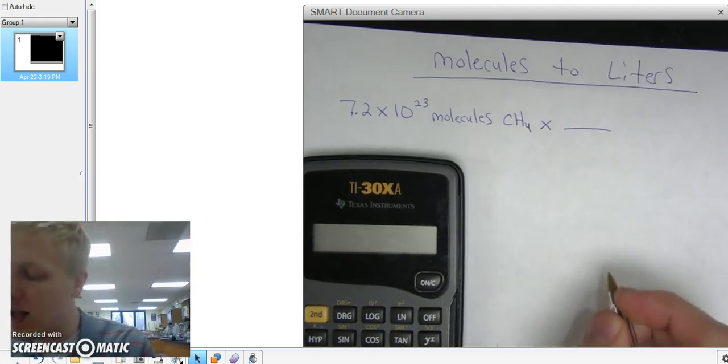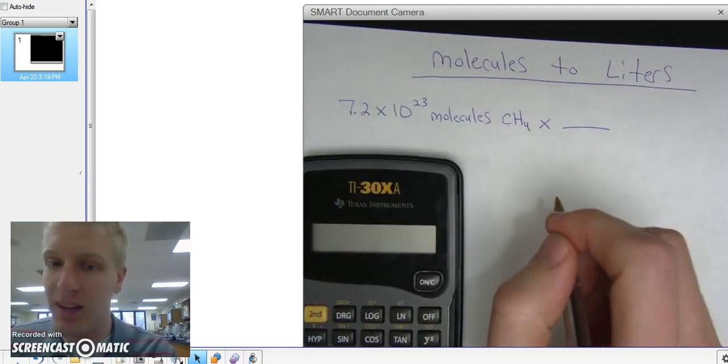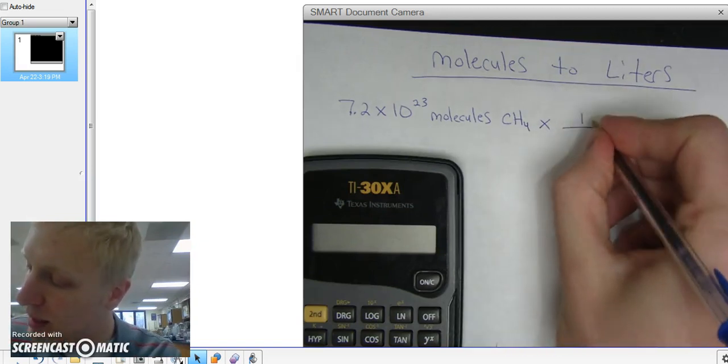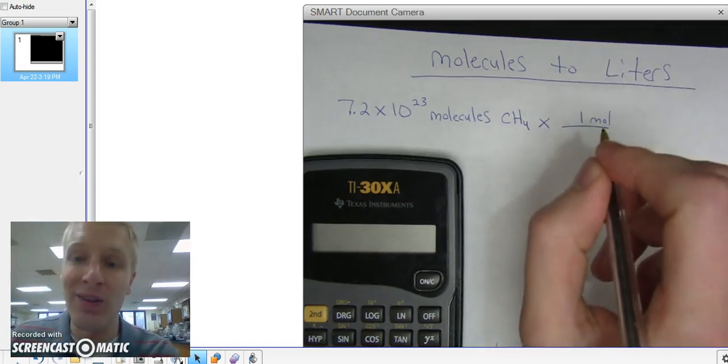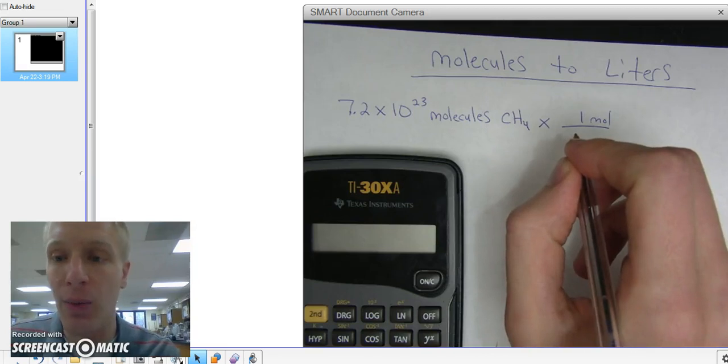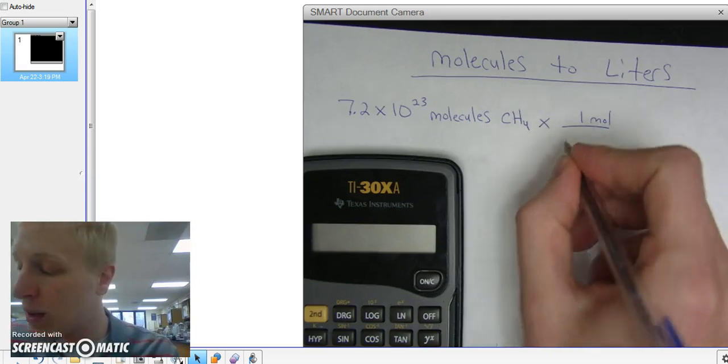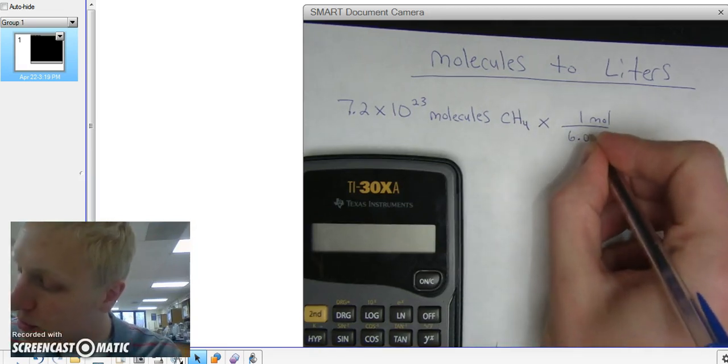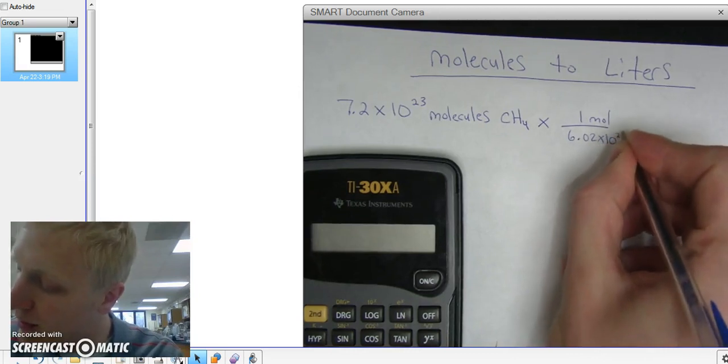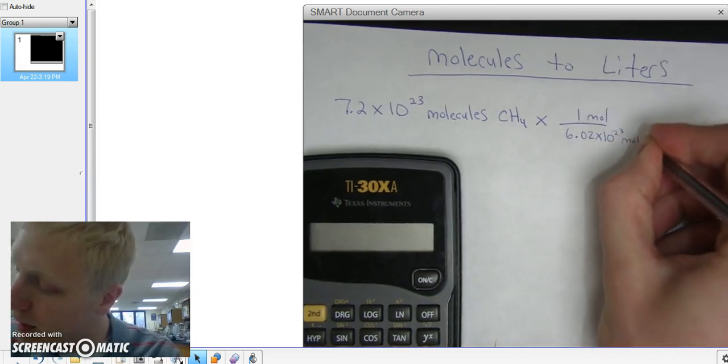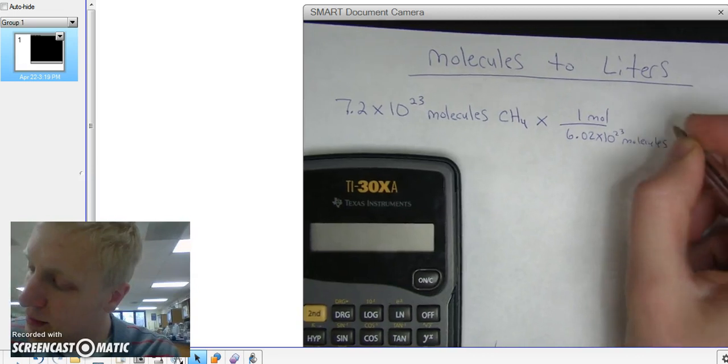So I'm going to take 7.2 times 10 to the 23rd molecules and I'm going to multiply it by 1 mole. I know that there's always 6.02 times 10 to the 23rd molecules per 1 mole. That's Avogadro's number. 6.02 times 10 to the 23rd molecules. Sadly there's no abbreviation.